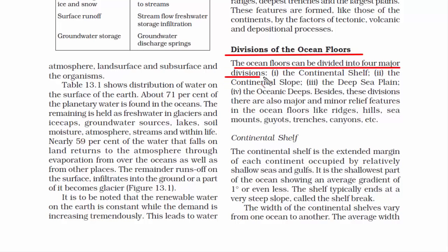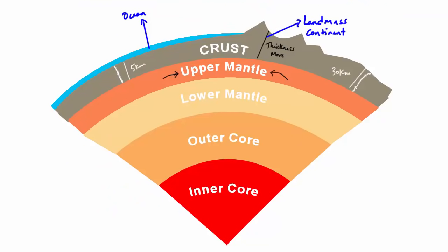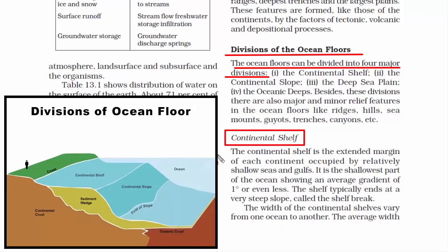The ocean floor can be divided into four major divisions. The first is the continental shelf. The continental crust is the part on which we live. If you go to a beach and start walking towards the water, you will notice the land gradually descends. Then all of a sudden the continental crust ends at a very steep slope — that point is called the continental shelf break. The region between the continental shelf break and the beginning of the beach is known as the continental shelf.